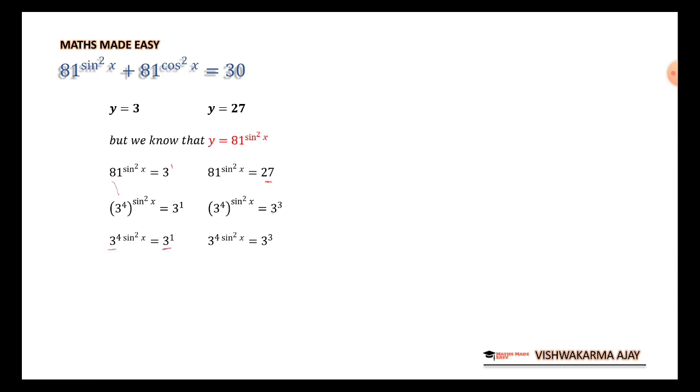Now, since the base are same, I can equate the equation and we have 4 sin square x is equal to 1. 4 sin square x is equal to 3. Now, this 4 comes here under 1, this 4 comes here under 3. So, we have the value of sin square x is equal to 1 upon 4, sin square x is equal to 3 upon 4. Taking square root on both the sides, we have the value of sin x that is 1 upon 2. We have the value of sin x that is root 3 upon 2.